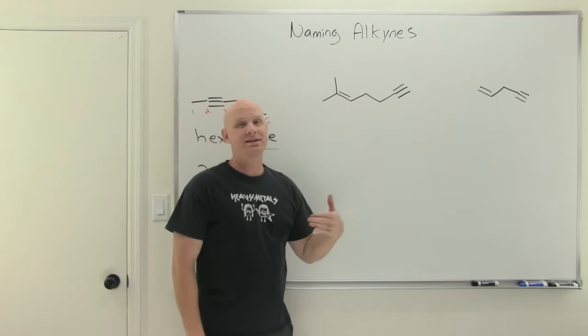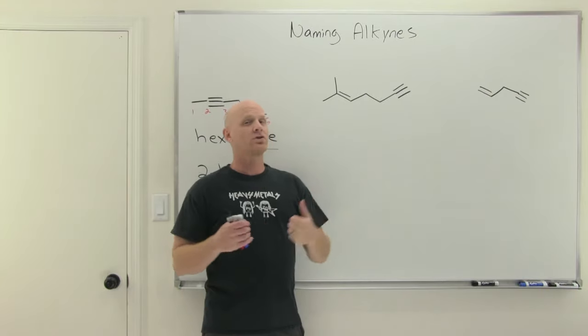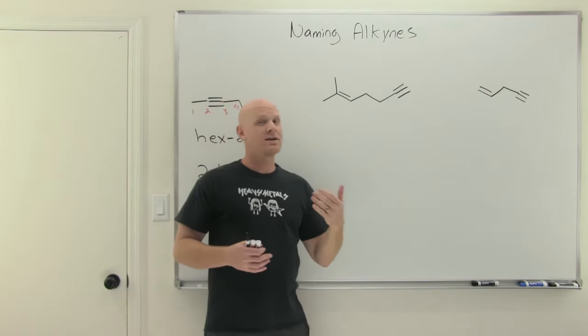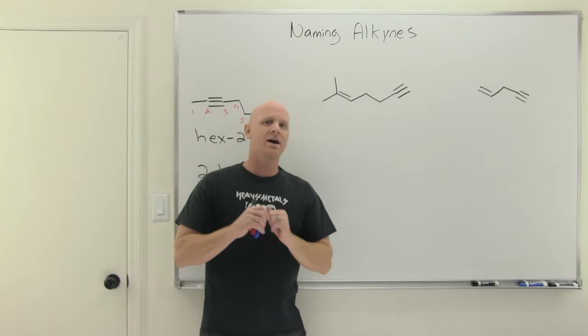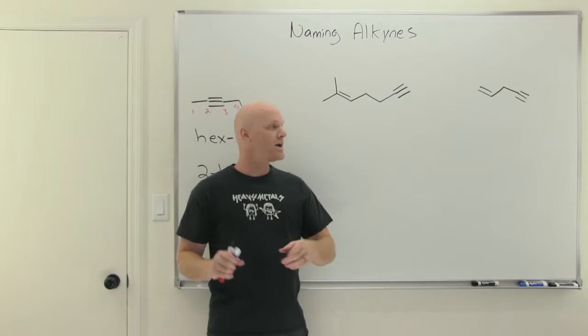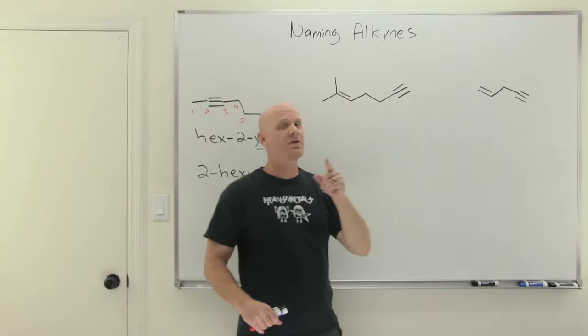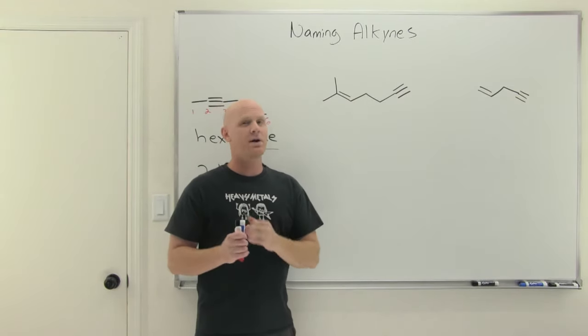Which one gets priority is not set - it's determined numerically first. If the alkene can get the lower number, the alkene gets priority. If the alkyne can get the lower number, the alkyne gets priority. And if it's a tie, we'll find out on this last example that the alkene gets priority on the tiebreaker.